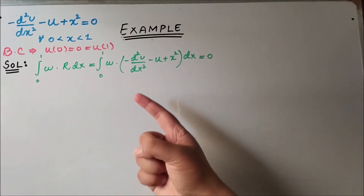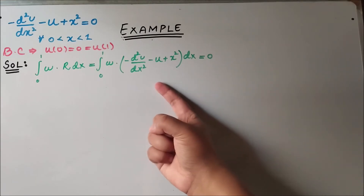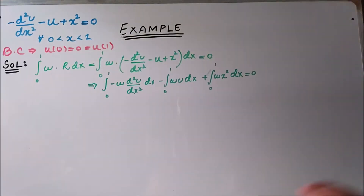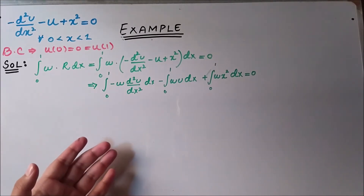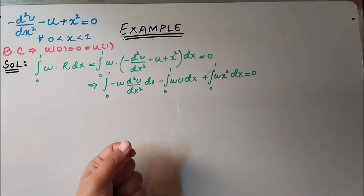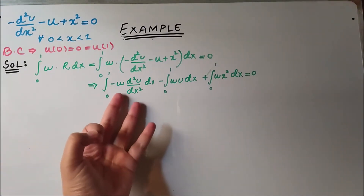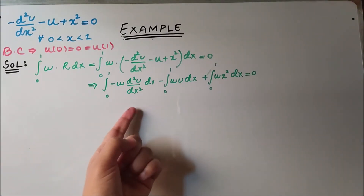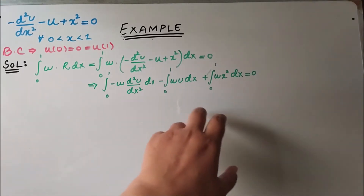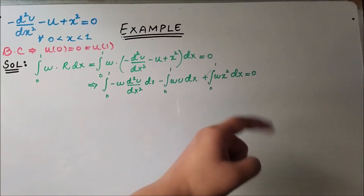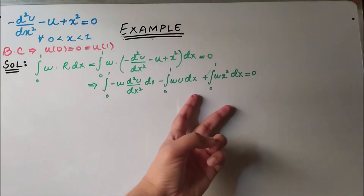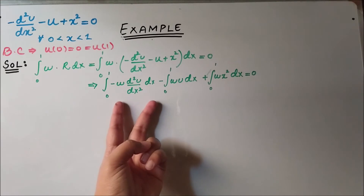Here W is the weight function and we have the residual. Since the integral is linear, we can write the integral in expanded form. Now we have to do integration by parts on the term containing the second derivative, because the differential is only in that part. We don't need integration by parts on the remaining terms since there is no derivative of displacement there.